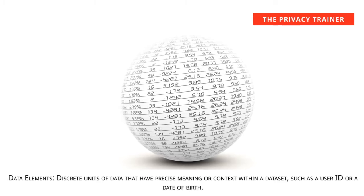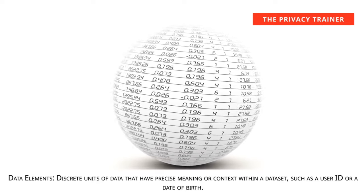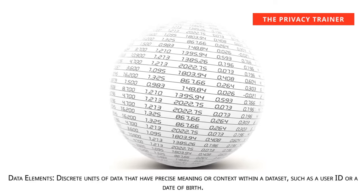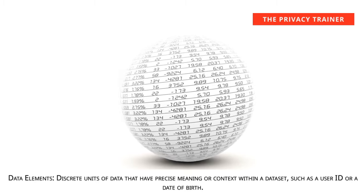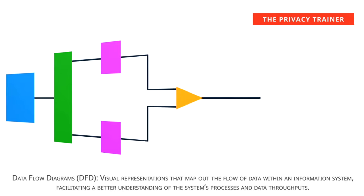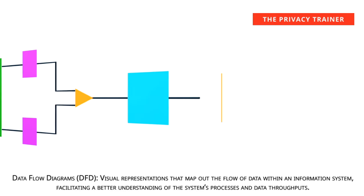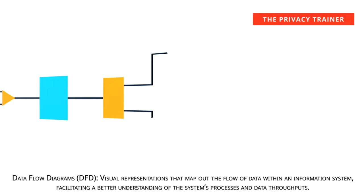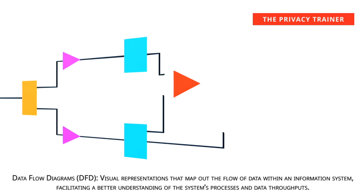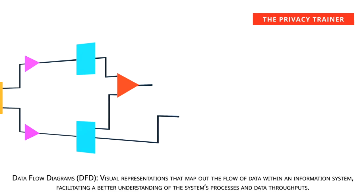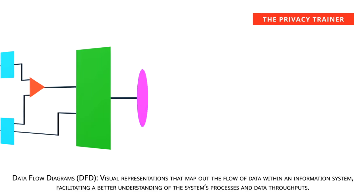Data elements. Discrete units of data that have precise meaning or context within a dataset, such as a user ID or a date of birth. Data flow diagrams, DFD. Visual representations that map out the flow of data within an information system, facilitating a better understanding of the system's processes and data throughputs.